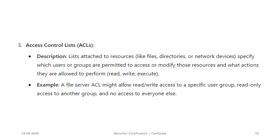Access control lists, or ACLs, are lists attached to resources like files, directories, or network devices that specify which users or groups are permitted to access or modify those resources and what actions they are allowed to perform — that is, read, write, execute, etc. For example, a file server might allow read or write access to a specific user or group, read-only access to another group, and no access to everyone else.